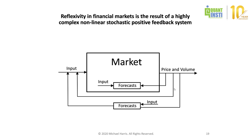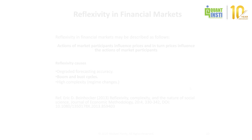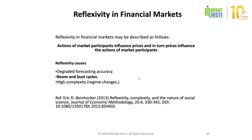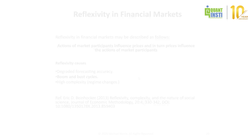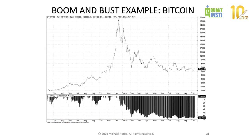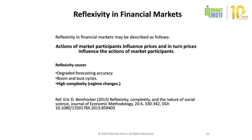Reflexivity causes boom and bust cycles. The example is Bitcoin: everyone thought Bitcoin would go to a million in 2018, and everyone bought until the trade became unsustainable and Bitcoin crashed. This was a reflexivity period. The result is high complexity and regime changes.